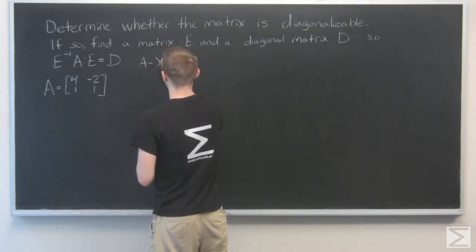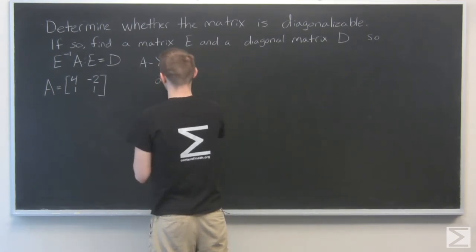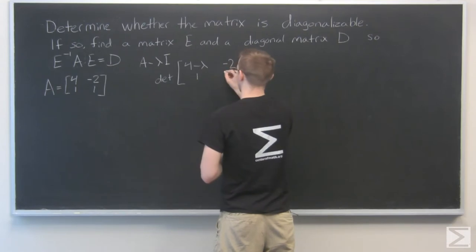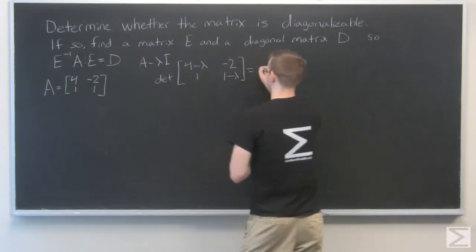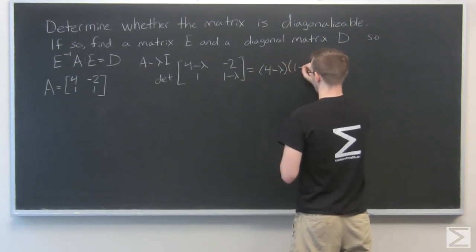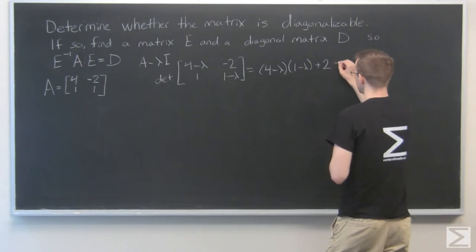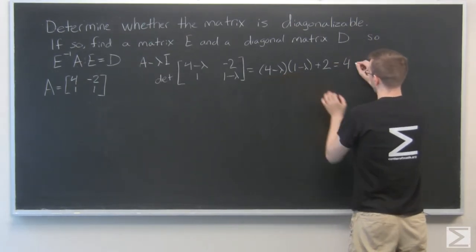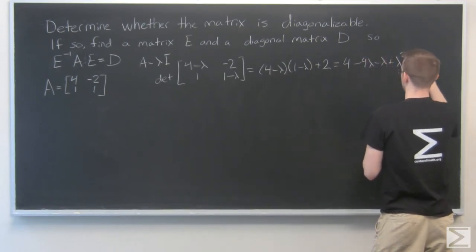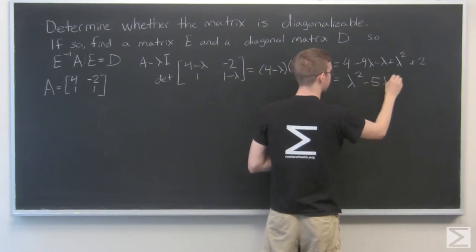We need to look at the matrix A minus lambda I and find the determinant of it. So we are going to find the determinant of 4 minus lambda, minus 2, 1, and 1 minus lambda. And that's going to be equal to 4 minus lambda times 1 minus lambda minus 2. We'll follow that up: 4 minus 4 lambda minus lambda plus lambda squared plus 2. That's going to be equal to lambda squared minus 5 lambda plus 6.